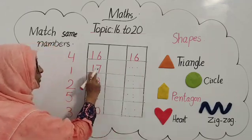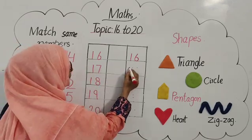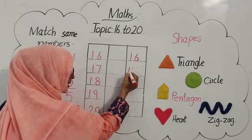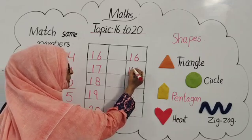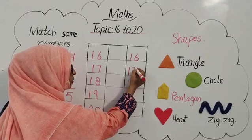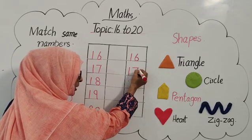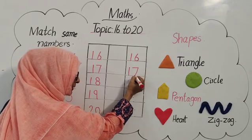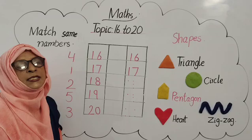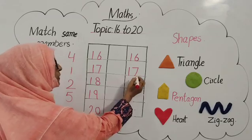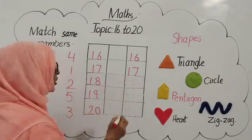After 16 comes 17. Okay, write 1. Now put pencil on the door. Draw a slipping line, then a sliding line — that makes 7. 1, 7: 17.